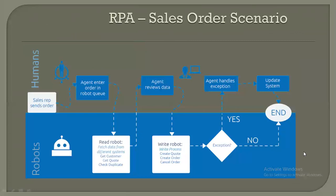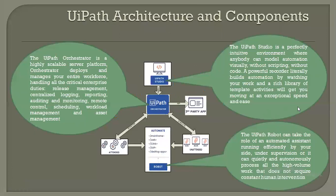The next is a simple sales order scenario. A sales representative sends an order to an agent. Instead of the agent entering records one by one, in the combined human-robot mode, the agent enters the order into a robot queue. The robot validates, checks for duplicates, converts to proper data, and gives it back to the agent for review. The bot then goes to the application, creates a quote, creates or updates an order, and handles exceptions by giving the list back to the agent for manual handling.